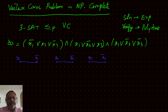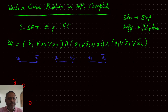So one edge for each literal pair. And then we need to create one triangle for each clause. So for the first clause we get the triangle with nodes X1-bar, X2, X3-bar, and for the second clause we get the triangle with nodes X1, X2-bar, X3-bar.